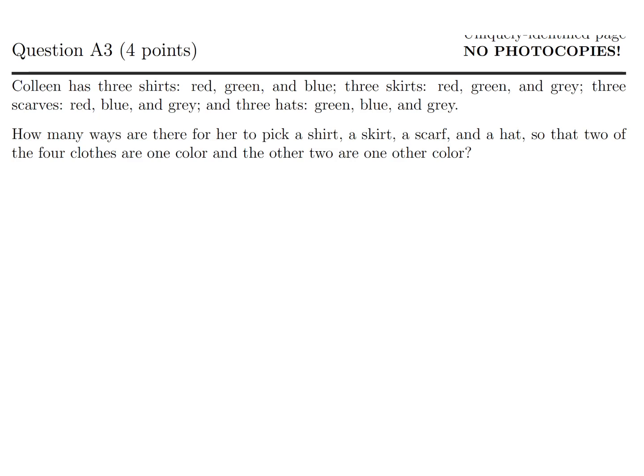Colleen has three shirts, red, green, blue, three skirts, red, green, gray, three scarves, red, blue, gray, and three hats, green, blue, gray. How many ways are there for her to pick a shirt, skirt, scarf, and hat so that two of the four clothes are one color, and the other two are one other color? Let's try to arrange this into something that would make a little bit more easier for us to compare. So first, let's list the clothes items. And then we will fill in the colors.